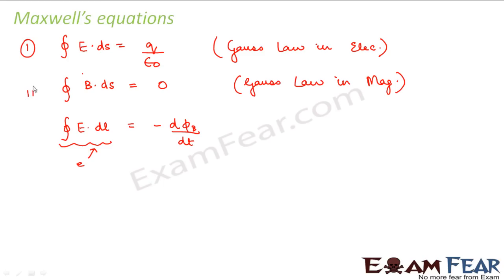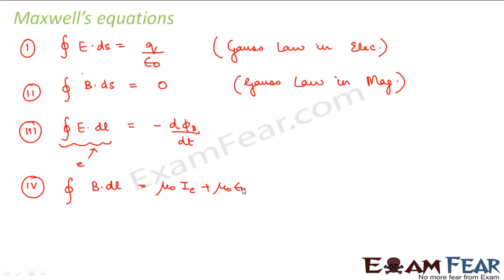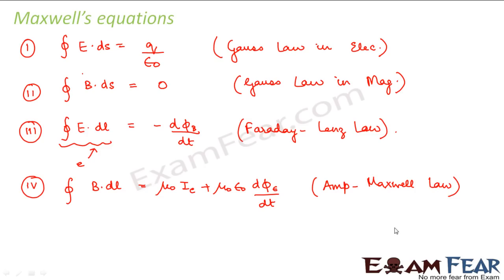The fourth and final equation is the Ampere-Maxwell law: ∮B·dL = μ₀Ic + μ₀ε₀(dΦE/dt). Together these four equations are known as Maxwell's equations. The first and second relate to surface integrals of electric and magnetic fields respectively; the third and fourth relate to line integrals of electric and magnetic fields respectively. They are counterparts of each other, showing how closely electricity and magnetism are related.